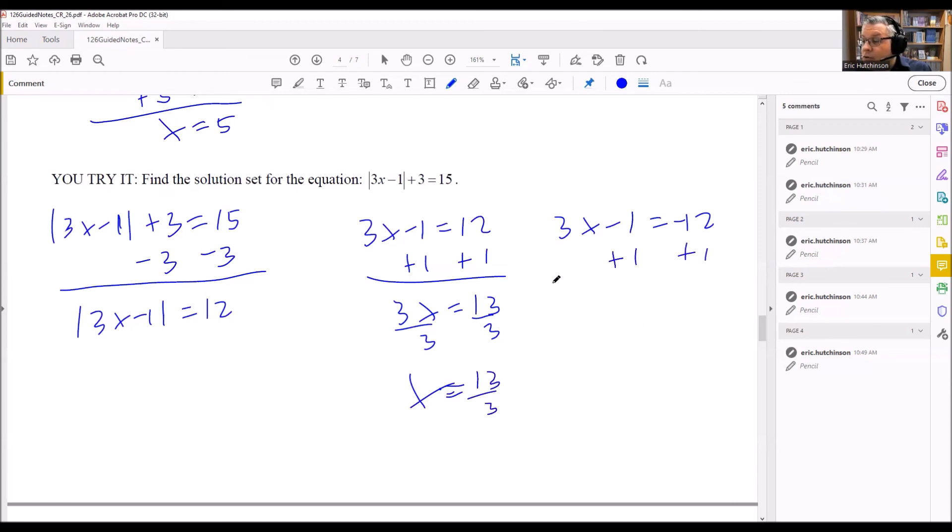This other one, if we add 1 to both sides, 3x equals negative 11. Divide both sides by 3, and we get x is equal to negative 11 thirds. So you'll get fraction answers, but again, you have two solutions.